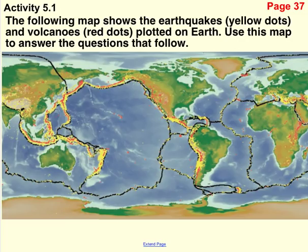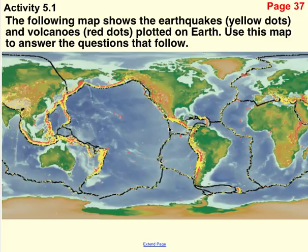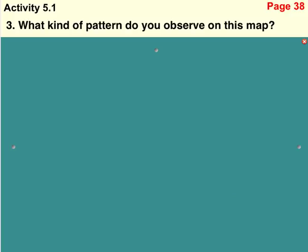Let's move on. If you look at the bottom of the page, here's a colored version of the map. This map shows the earthquakes as yellow dots and the volcanoes as red dots plotted on the earth. You also see dark lines — those are the different major plates and some smaller plates around the earth. Use this map to answer the questions that follow. You should be on page 38. What kind of pattern do you observe on this map? Pause the video and give the question an honest effort.